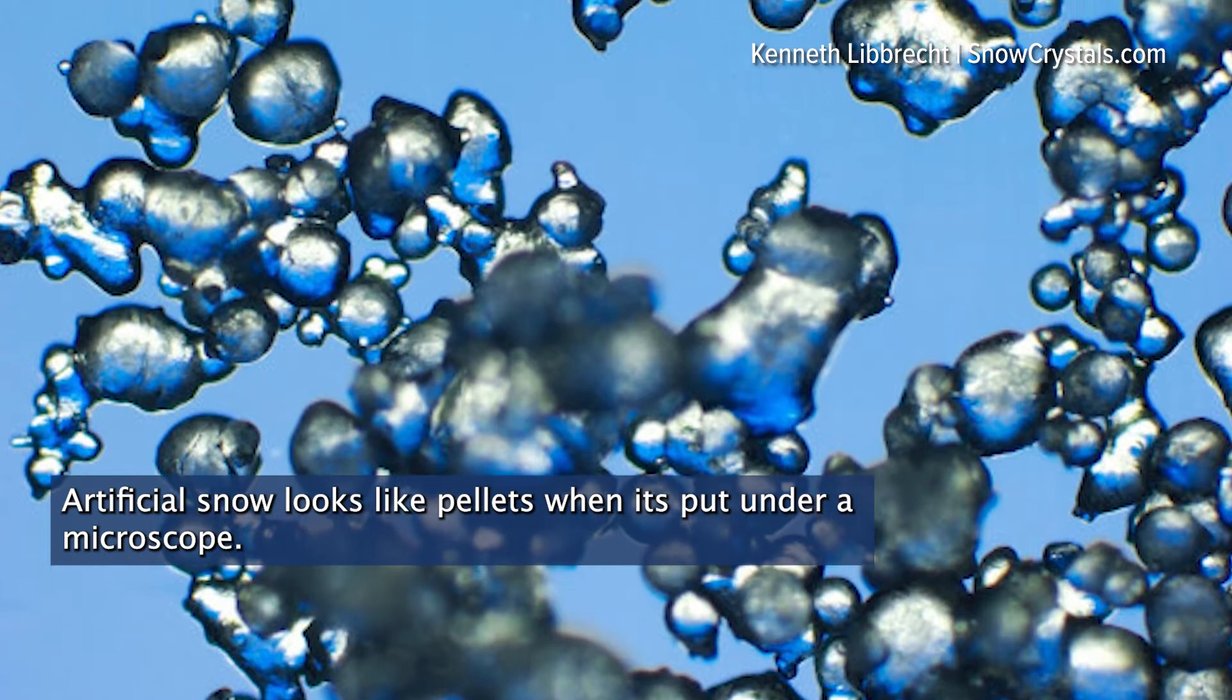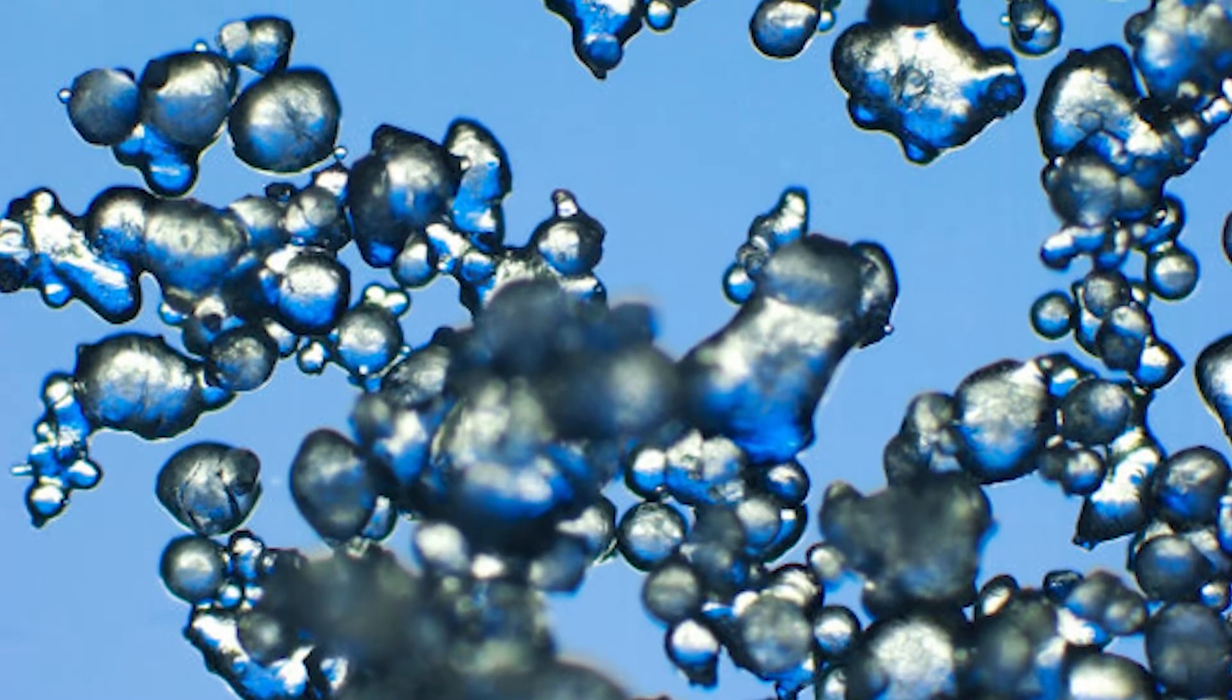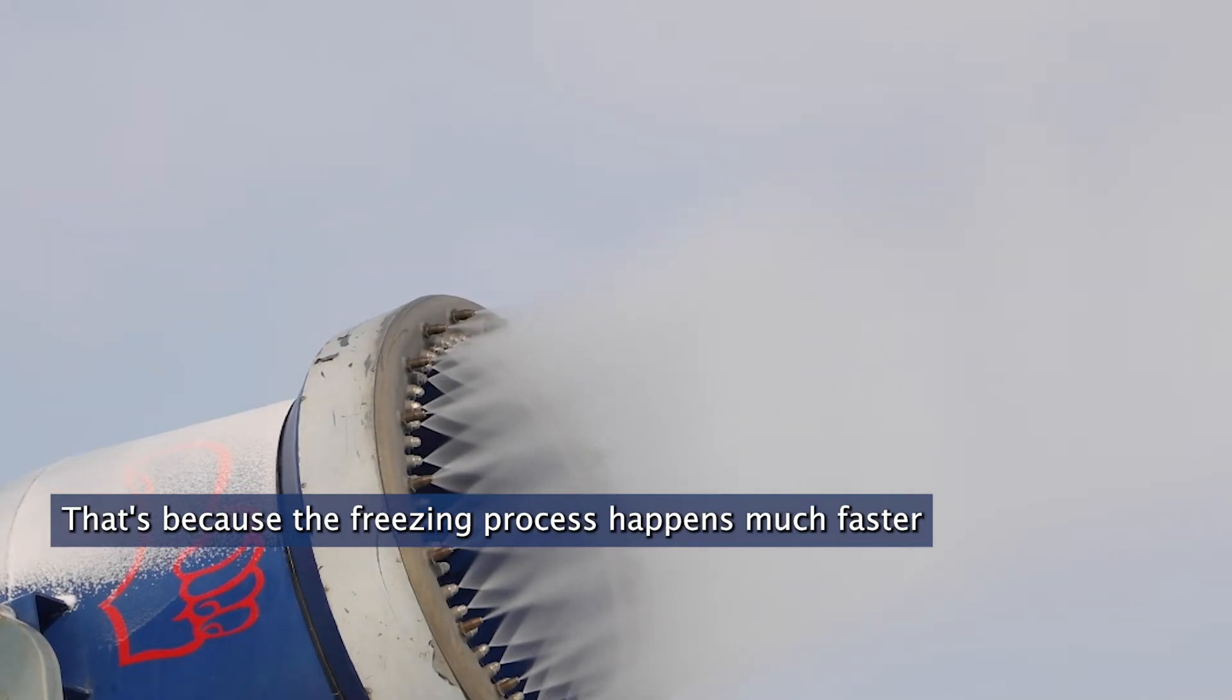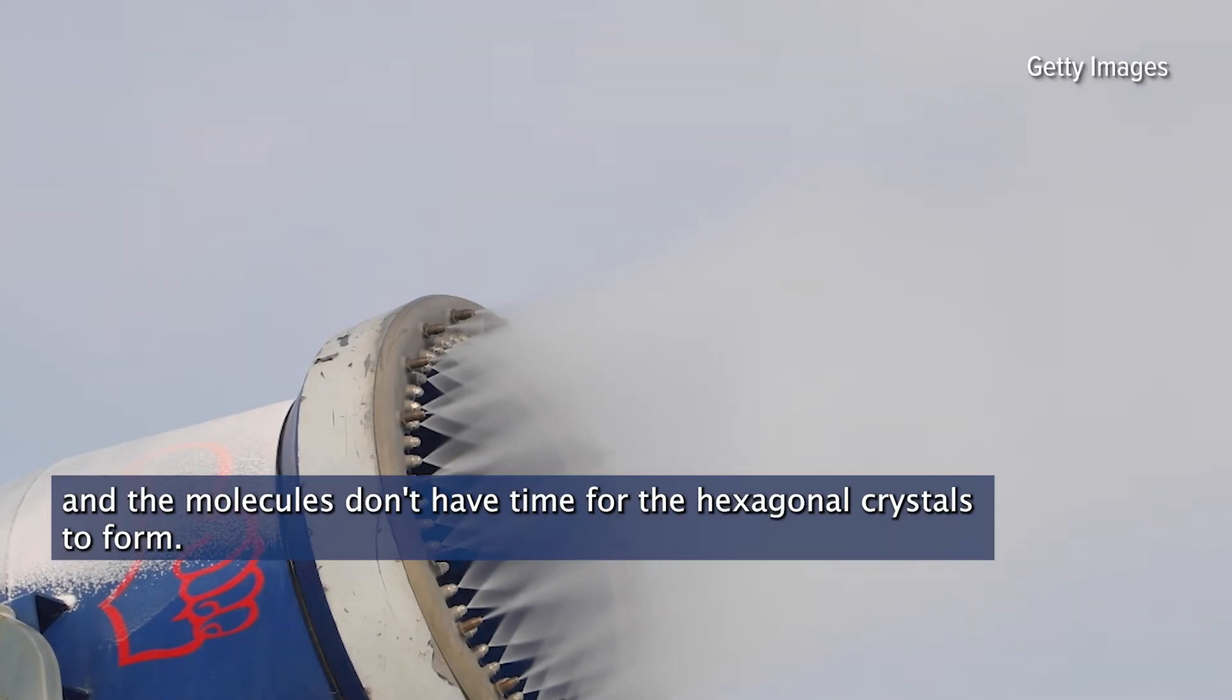Artificial snow looks like pellets when put under a microscope. That's because the freezing process happens much faster, and the molecules don't have time for the hexagonal crystals to form.